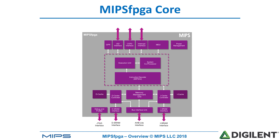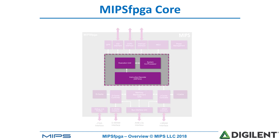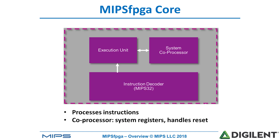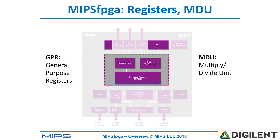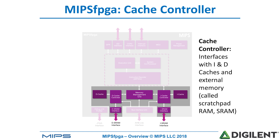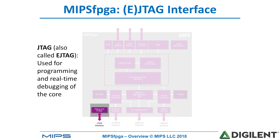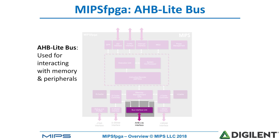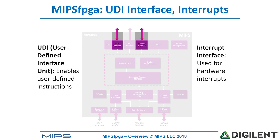Here's a figure of the overall core. In the center we have the execution unit with the system coprocessor, including an instruction decoder. Supporting that we have general purpose registers and a multiply-divide unit. On the bottom of this figure you can see the memory system: the MMU, the caches, and the cache controller. At the very bottom we can see interfaces to the scratch pad RAM. One important interface is the JTAG, also called the EJTAG interface, used for programming and real-time debugging of the core. Another interface is the HB light bus, used for interfacing with memories and peripherals. At the top we have the UDI interface — the user-defined instruction interface — and the interrupt interface.